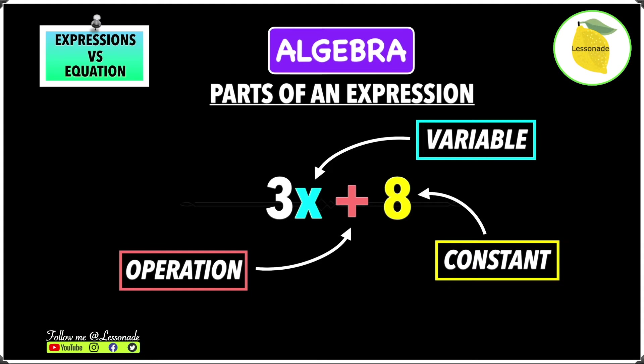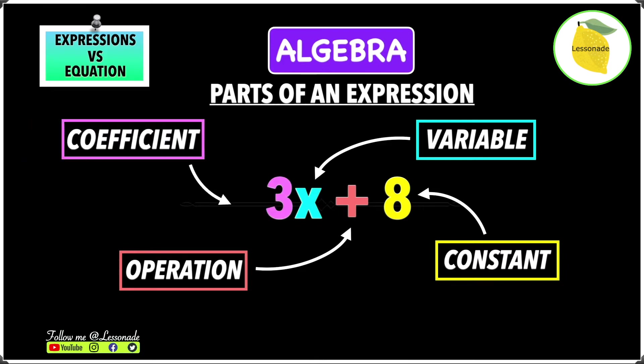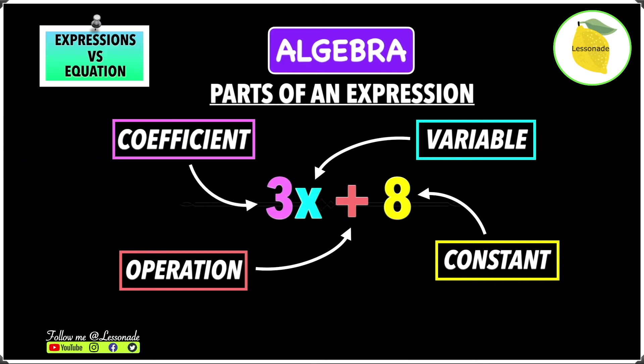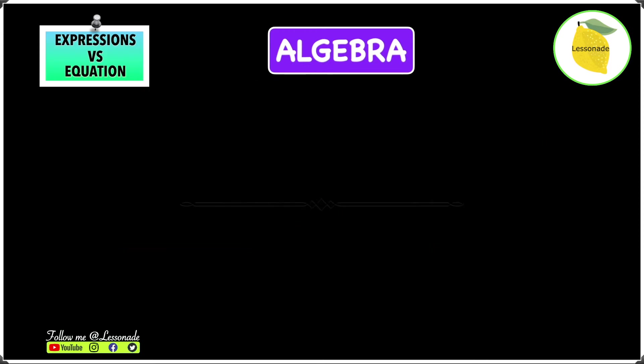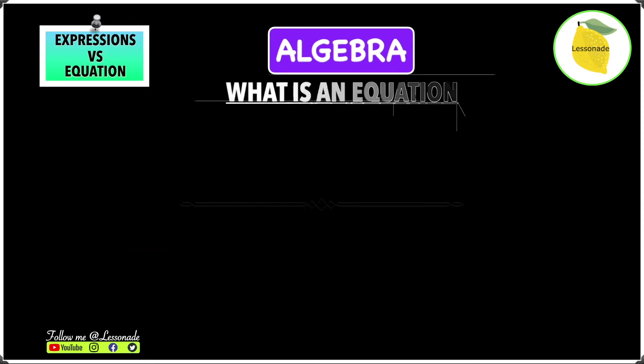The next thing is the number. A number on its own is called a constant — it does not have a variable with it, it's just a number on its own, such as 8. However, a number with a variable is called a coefficient.